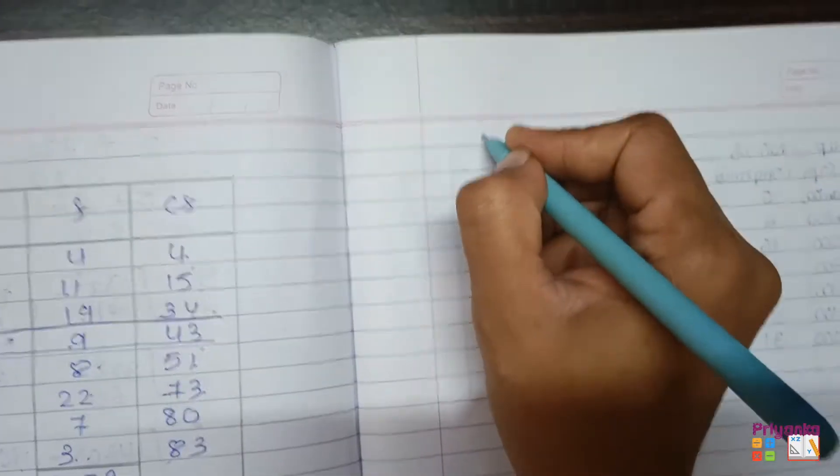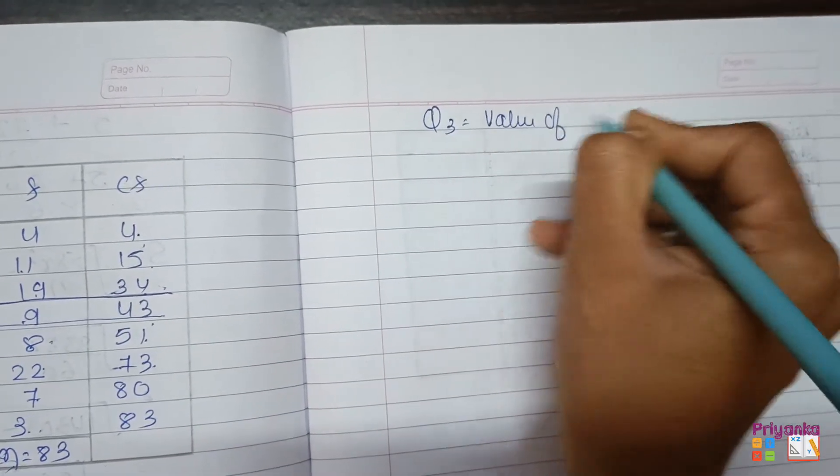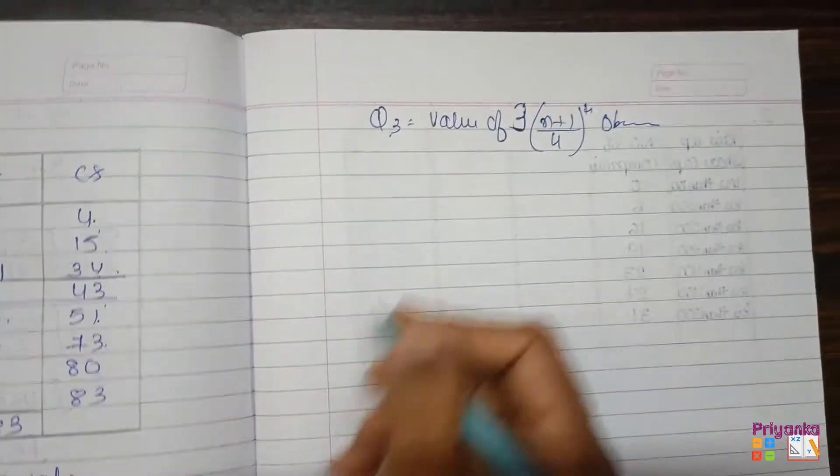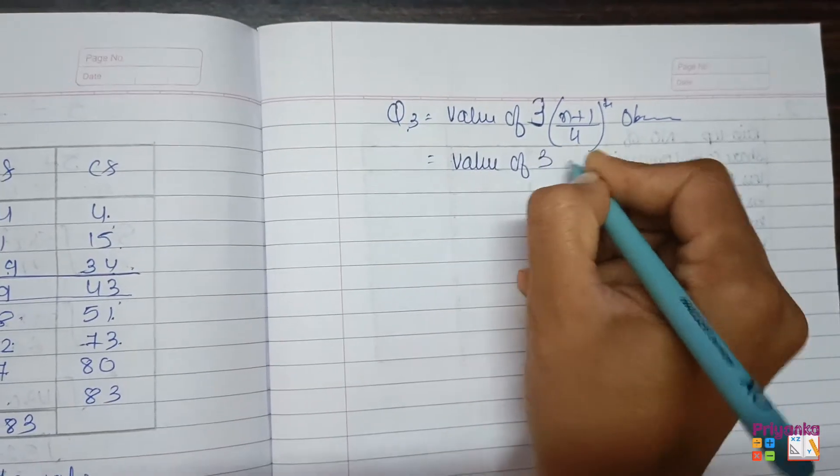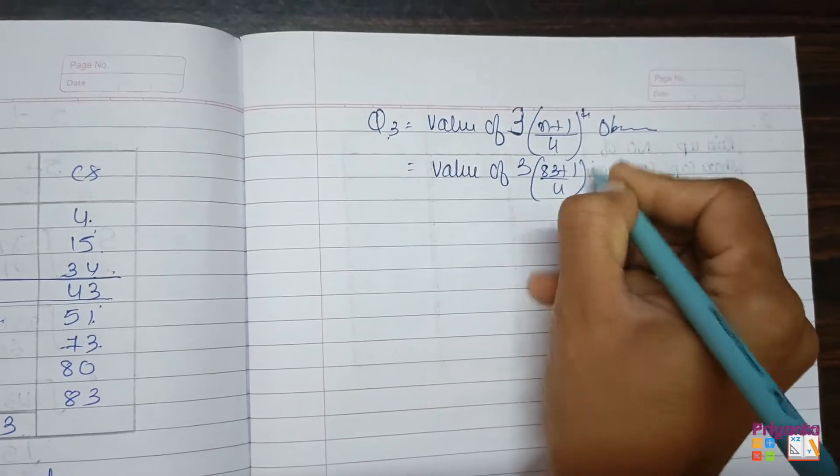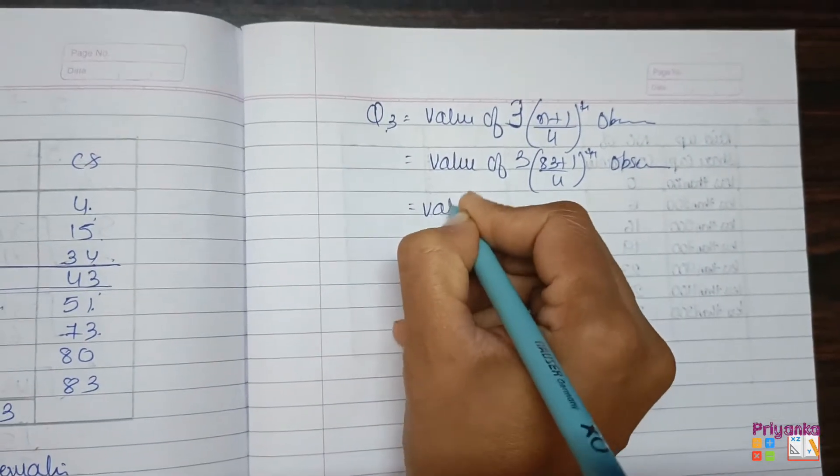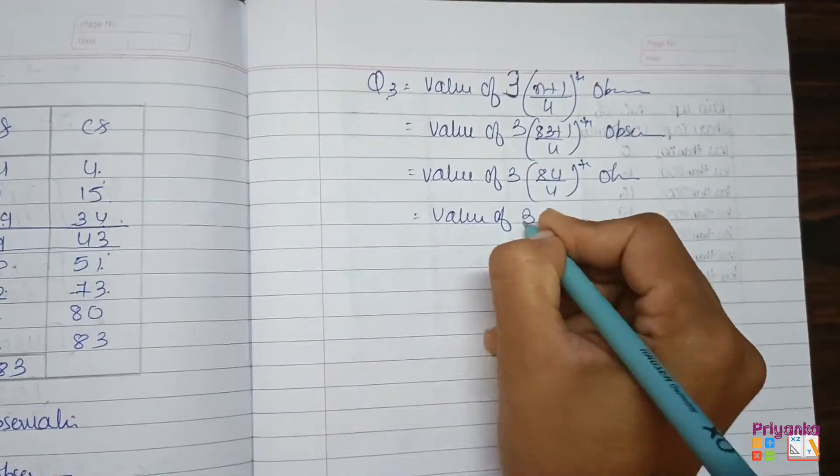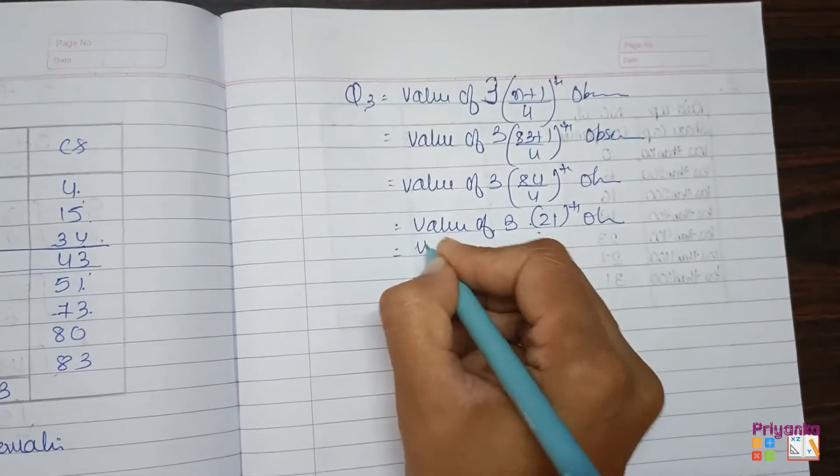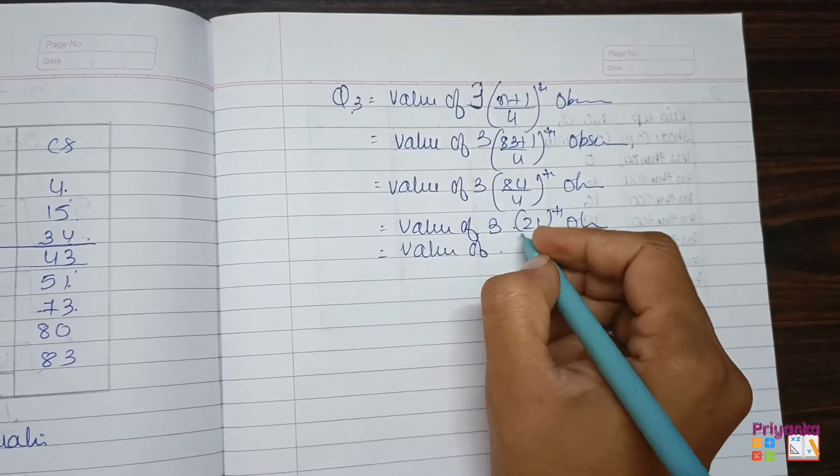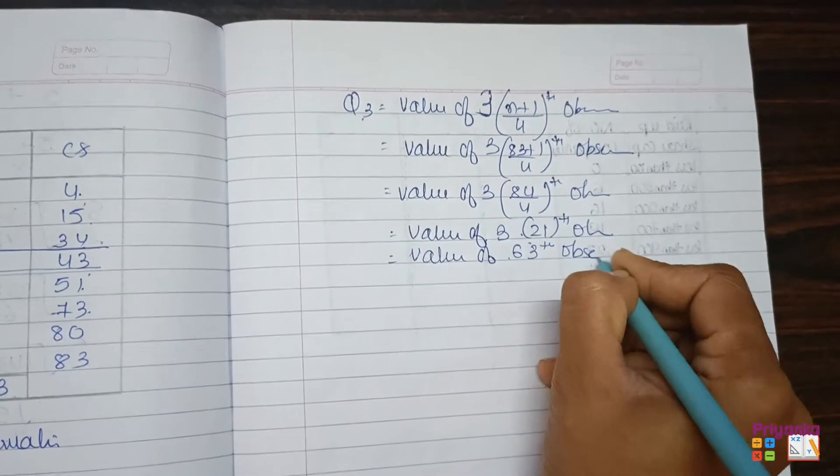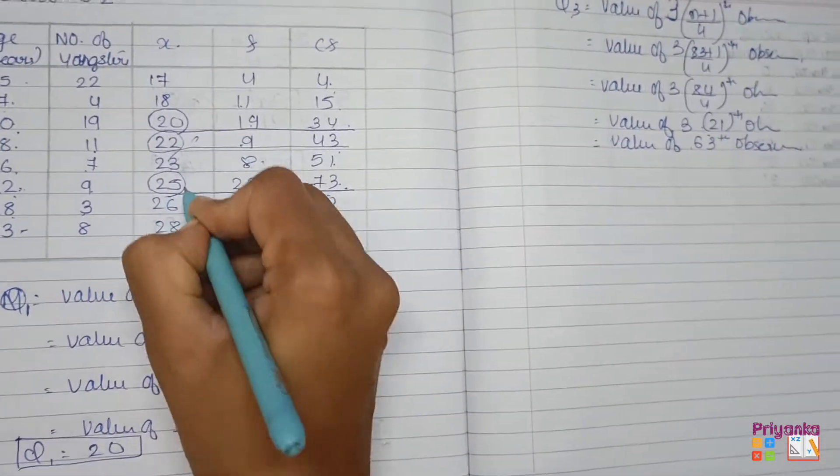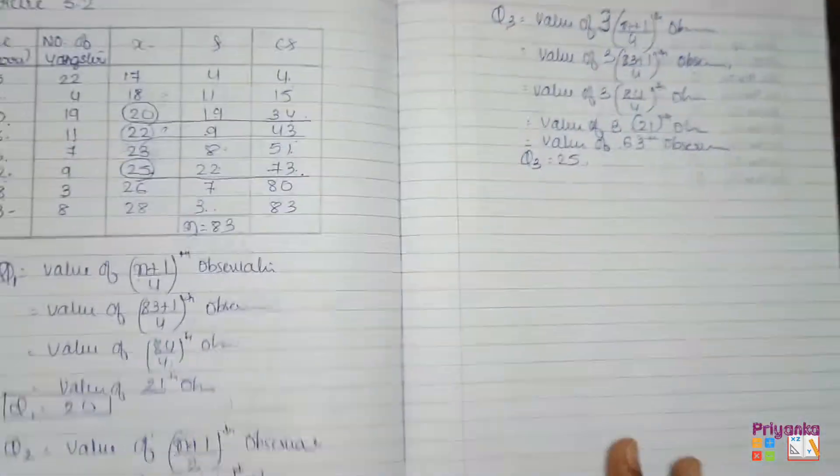In the same way, third quartile time Q3, value of j times n plus 1 divided by 4th observation. J is nothing, it is 3. So here your j will be 3. So here again the value of n is 83 plus 1 divided by 4th observation, that is 84 divided by 4th, which is 21. 21 multiplied by 3 will be 63, so 63rd observation. Come to the CF, 63 comes in the 73 CF. Drag the line and the observation, that is your third quartile, that is 25.